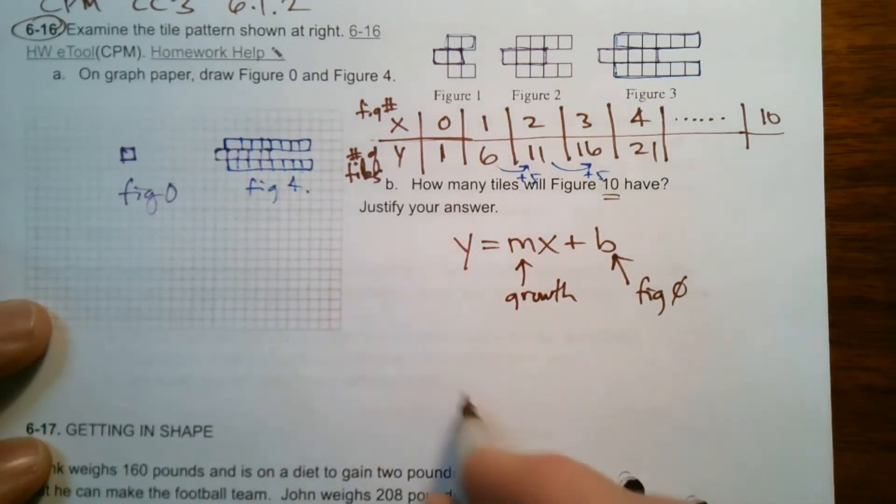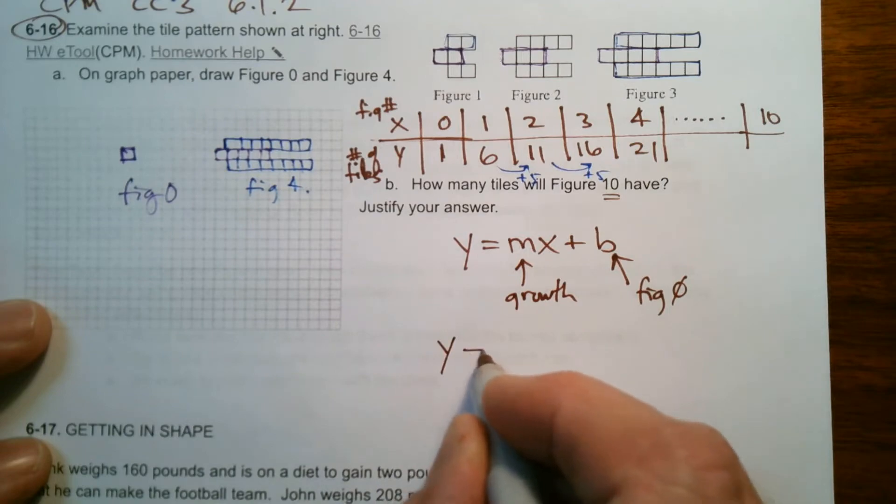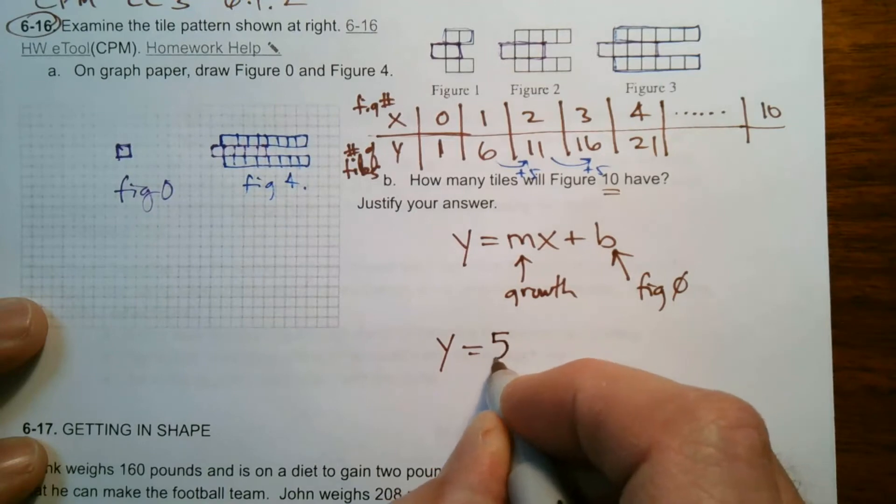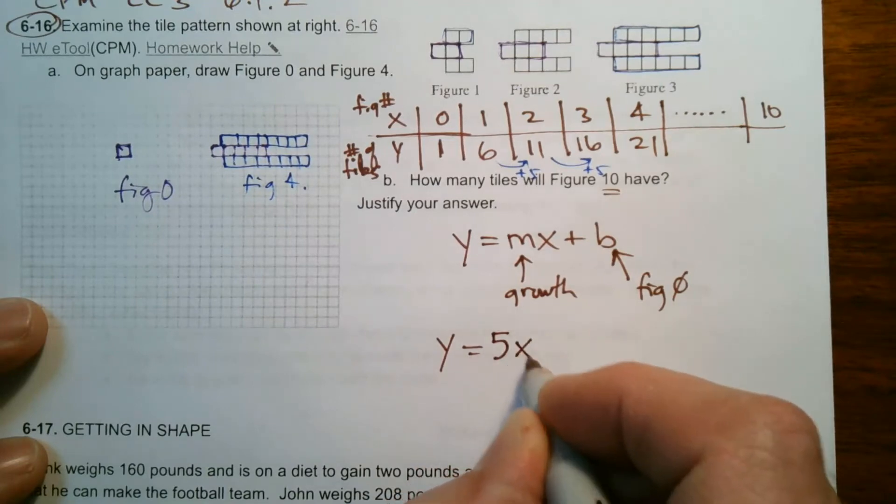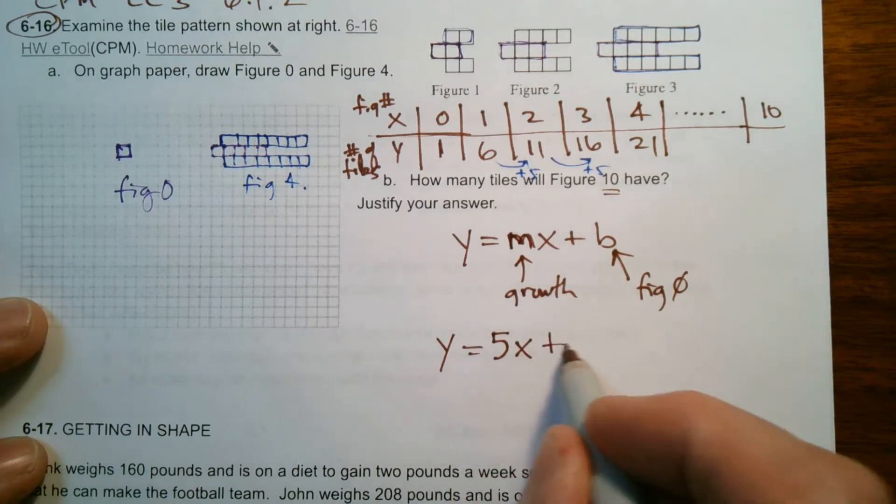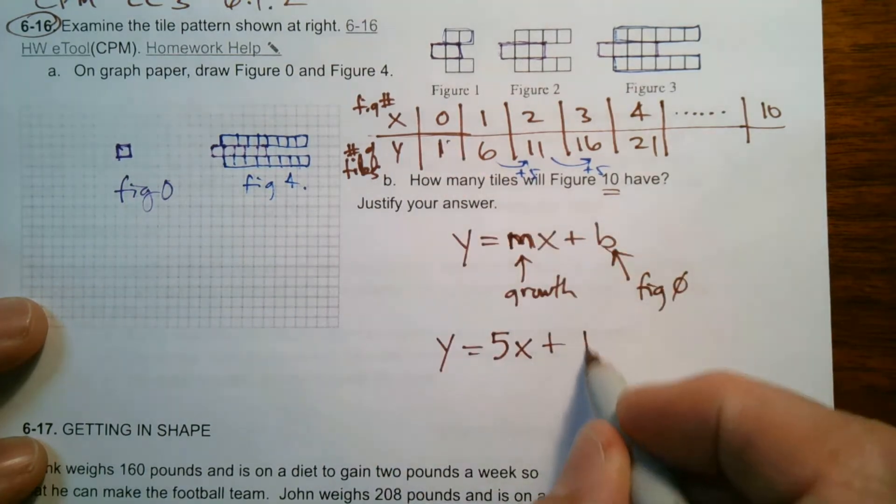So if I rewrite this equation with this information, I know the rule for my problem here is y equals - well, the growth is what? It's adding 5 each time, so the growth is 5. So I write y equals 5x, because the m represents the growth, plus Figure 0 has got 1 tile.